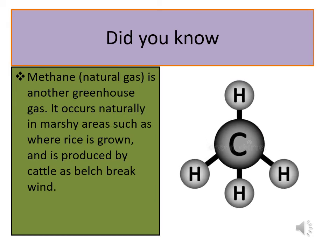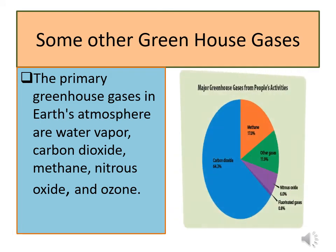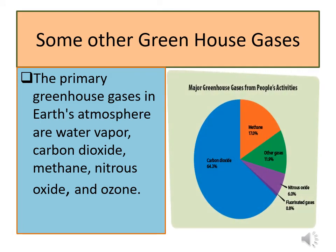Methane or natural gas is another greenhouse gas. It occurs naturally in marshy areas such as where rice is grown, and is produced by cattle as belch and break wind. The primary greenhouse gases in Earth's atmosphere are water vapor, carbon dioxide, methane, nitrous oxide, and ozone.